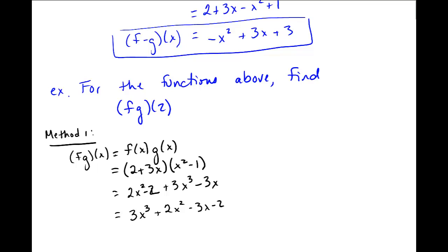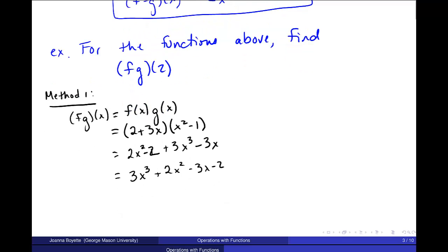And I would probably really write that 3x cubed plus 2x squared minus 3x minus 2. And so that's my function fg of x. And then I get fg of 2 by plugging 2 into that function: 3 times 2 cubed plus 2 times 2 squared minus 3 times 2 minus 2. Let me plug all of that into my actual function and we'll get an answer. I get fg of 2 is 24.